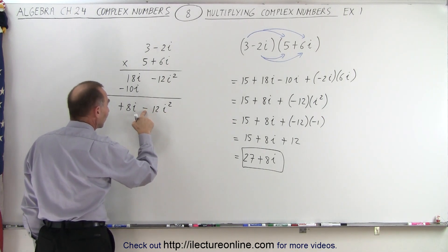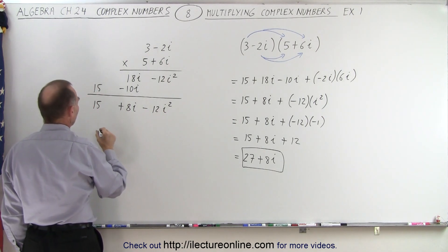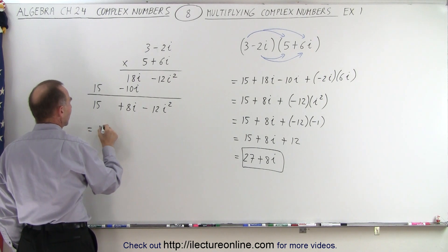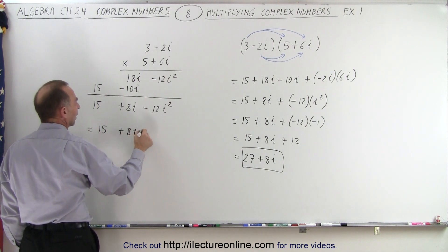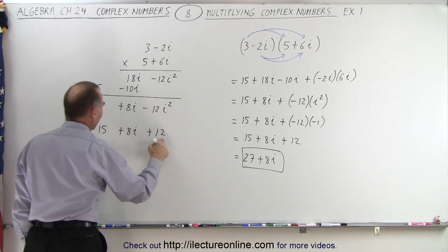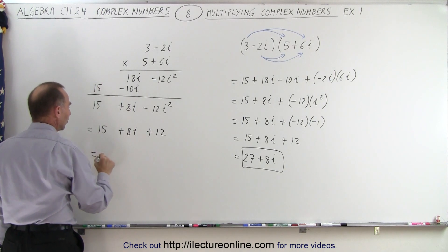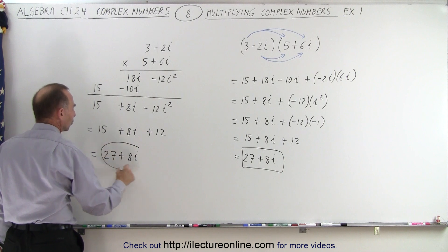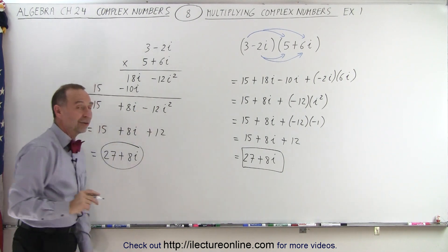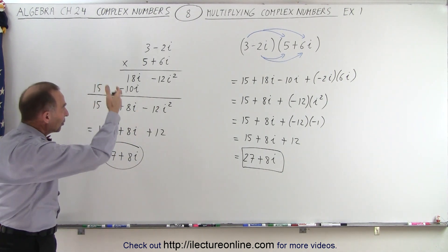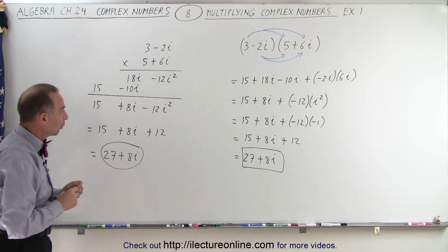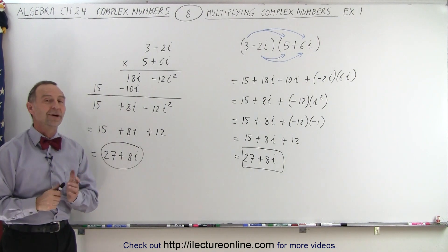Negative 12 times negative 1 gives us positive 12. So that's the same as 15 plus 8i plus 12. And then we add the 12 and the 15 together. This is equal to 27 plus 8i. And of course, we should get the same answer as we got before. But you can see you can also do this in a vertical way. And that is also how it's done.